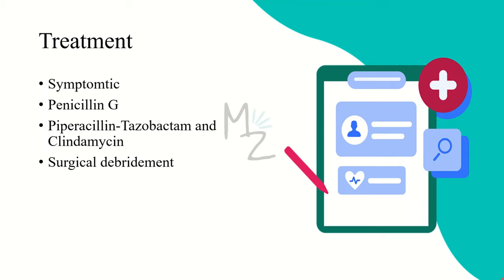Treatment. Food poisoning is treated on the basis of symptoms. For gas gangrene, the drug of choice is Penicillin G, which is administered intravenously, as opposed to Penicillin V, which is given orally. We can also give other antibiotics like piperacillin-tazobactam along with clindamycin, and we can also go for surgical debridement.